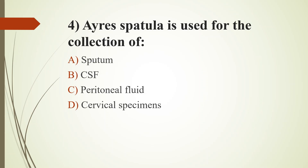Fourth question: Aery spatula is used for the collection of — Option A: sputum. Option B: CSF. Option C: peritoneal fluid. Option D: cervical specimens. Answer is Option D, cervical specimens. Aery spatula is a wooden spatula with a U-shaped opening on one side and a flat surface on the other; it is a more effective tool for taking a pap smear sample.